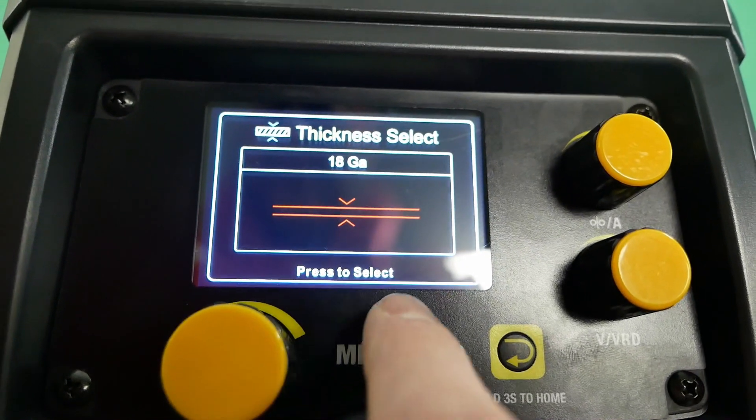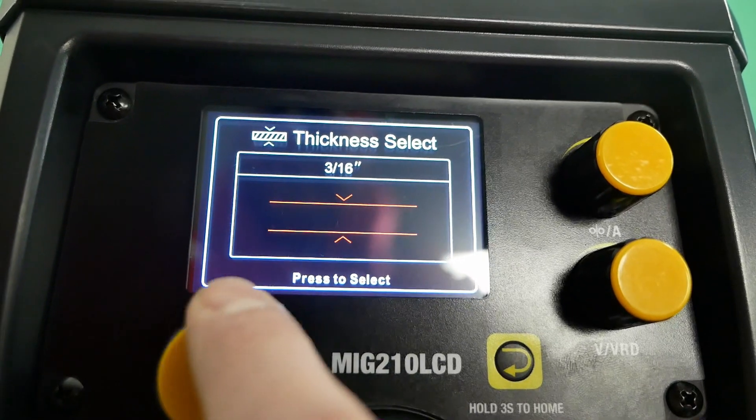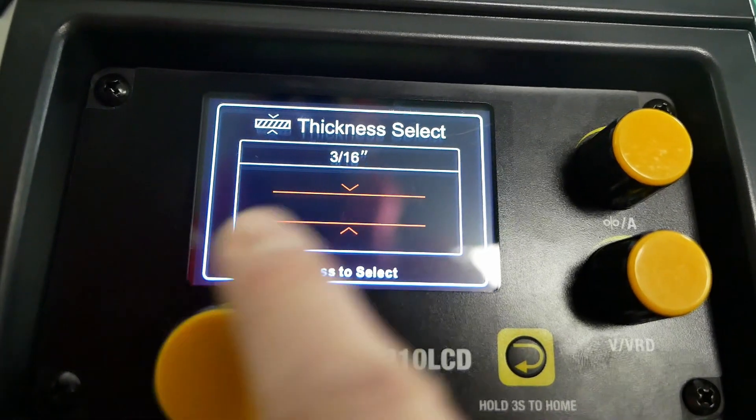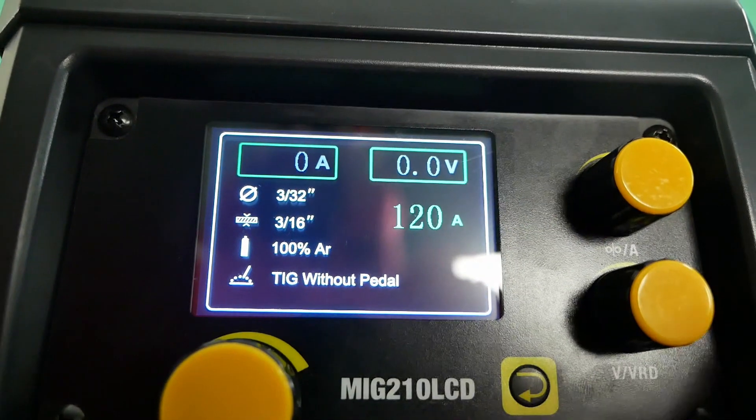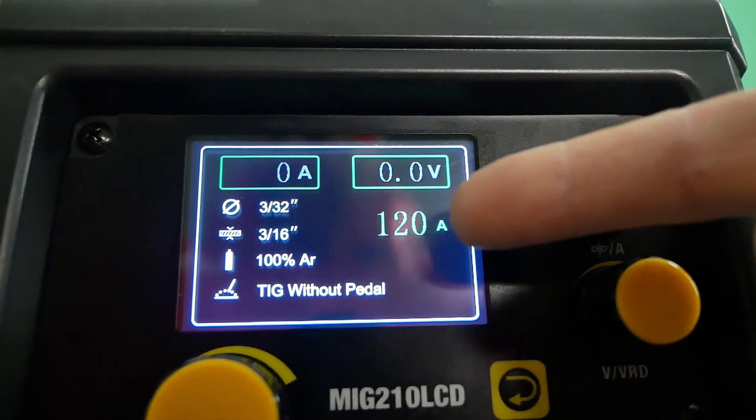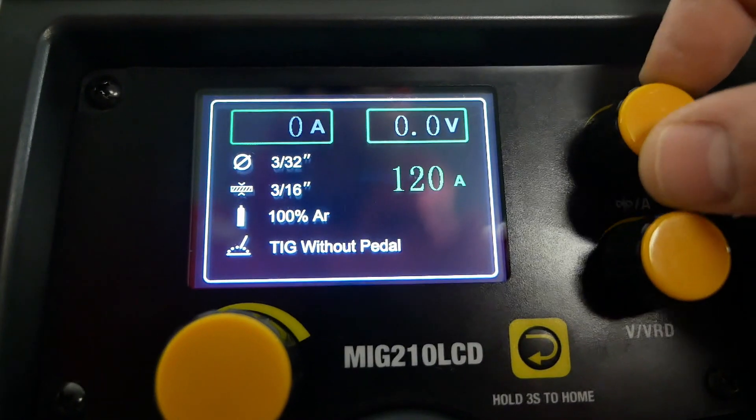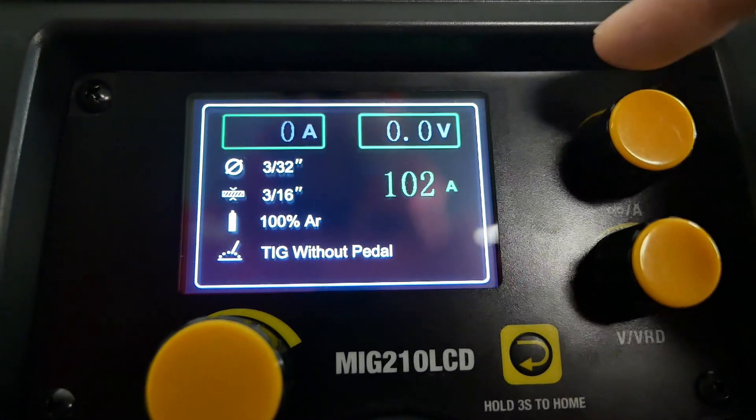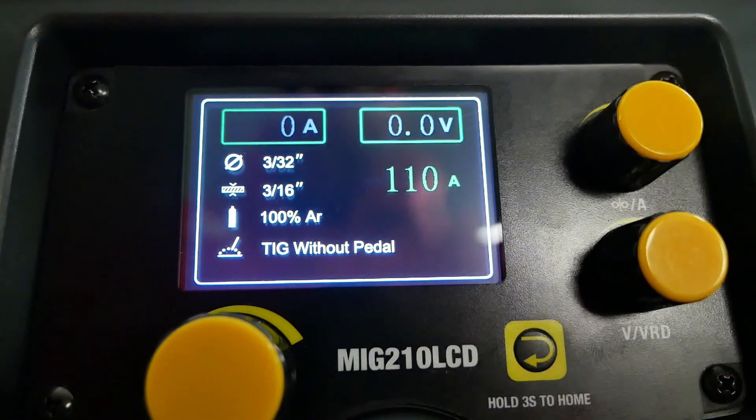If you know your material thickness, the machine will recommend settings that will help you achieve the highest quality weld. If you don't, set it to the maximum and simply run the amperage as you normally would. Now that we're back on our home screen we can see everything at a glance. Amperage for the TIG process is adjusted using the top right small knob on the face of the 210 LCD. Because this is a lift start TIG process, there is no foot pedal or trigger switch.